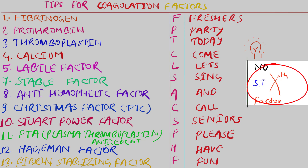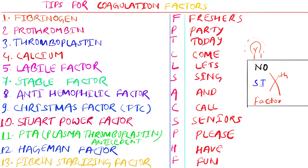You can easily remember the missing sixth factor by remembering the X in 'sixth' — the X looks like a cross, meaning it doesn't exist. Continuing the mnemonic: Sing stands for stable factor. And stands for anti-hemophilic factor. Call stands for Christmas factor. And there is another S which stands for Stuart's power factor — remember, the first S was for stable factor and the second S is Stuart's power factor. P is for plasma thromboplastin antecedent. H is for Hageman factor. Fun is for fibrin stabilizing factor.